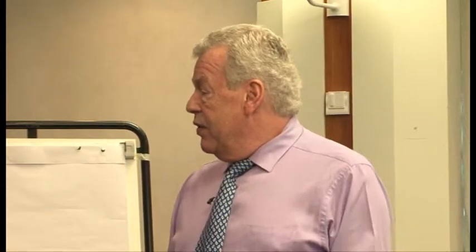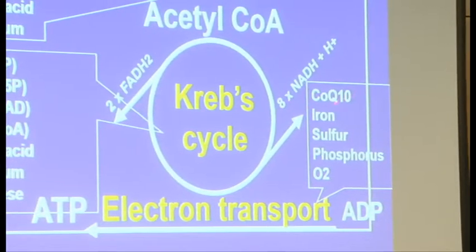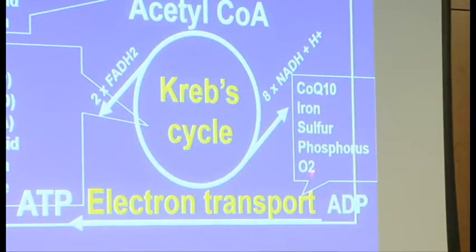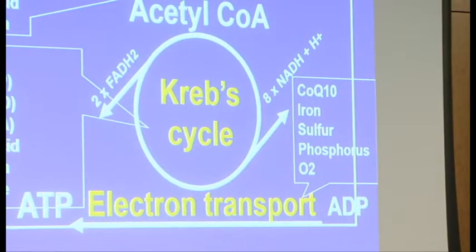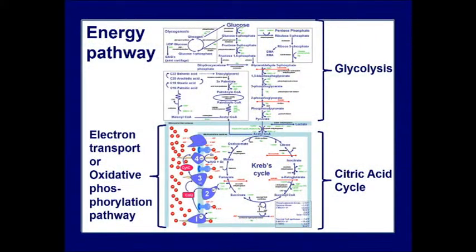FADH2 is the coenzyme of vitamin B2 — flavine adenine dinucleotide — and NADH is the active coenzyme of B3. These donate their hydrogens into the mitochondria for the electron transport pathway. So in the whole process we need B1, B2, B3, B5, magnesium, alpha-lipoic acid, and manganese. As a blockbuster formula, a B complex and magnesium are the key — people's performance improves dramatically with those two. B12 is also important because it excites the ability to carry oxygen.